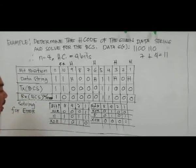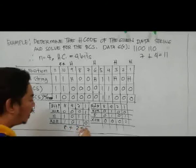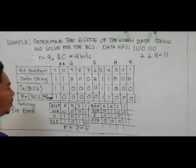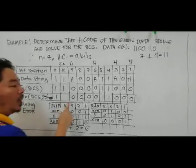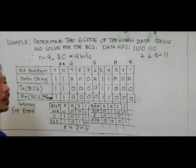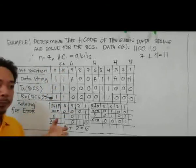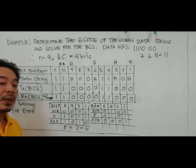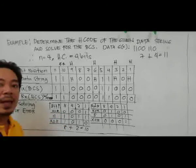Since there is a non-zero remainder, there is an error. The remainder is 1010, which is equivalent to 8 + 2 = 10. This means bit position number 10 is the error bit. The receiver will correct it: instead of 0, it should be 1. Forward Error Correction, or Hamming code, is used for error detection and correction. I hope you understand this discussion.